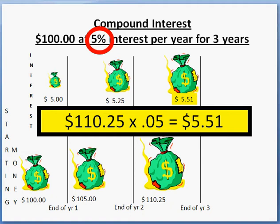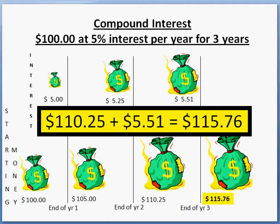At the end of year 3, we're going to accumulate another 5% interest, this time on the $110.25. Multiplying it by 0.05, we find that our interest at the end of the third year is $5.51. Adding it to the $110.25, we find that at the end of three years we have $115.76.